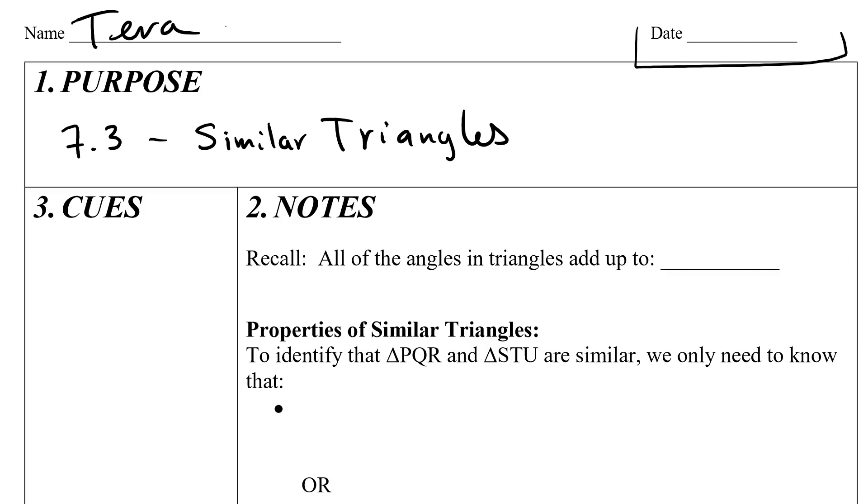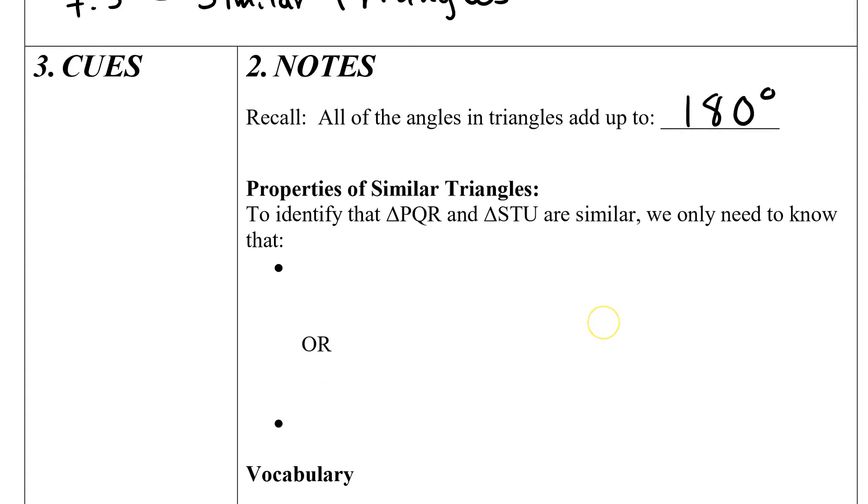Let's remember that activity we did in class. We remember that all angles in triangles always add up to 180. This is a very powerful tool for us when we're talking about similar triangles. When we're talking about similar triangles, we're talking about triangles that look the same because their angles are all the same. To identify if triangle PQR and triangle STU are similar, we only need to know that the angles are the same.